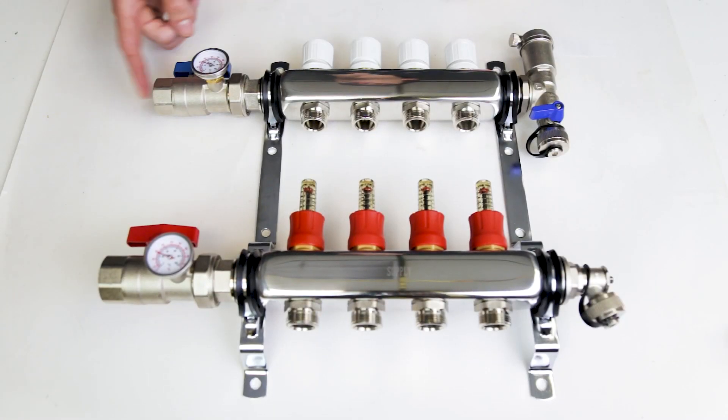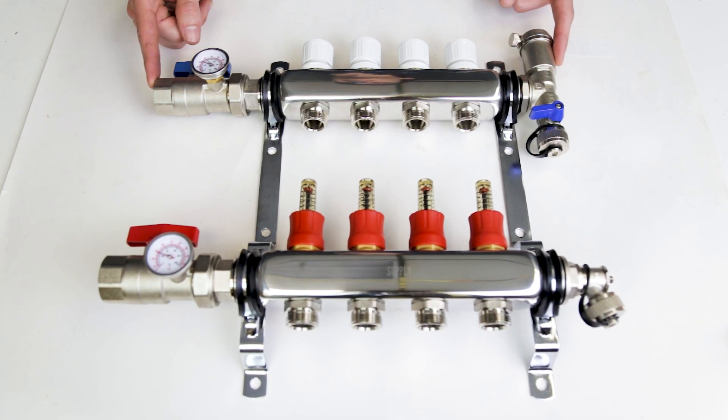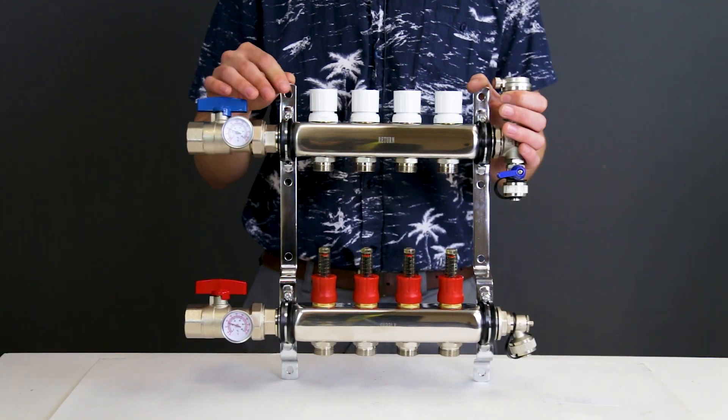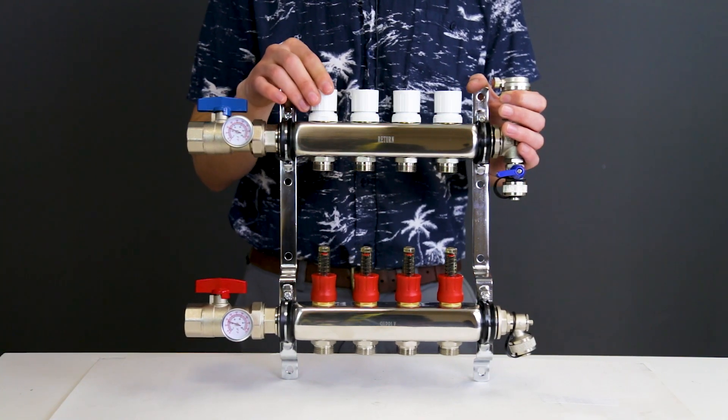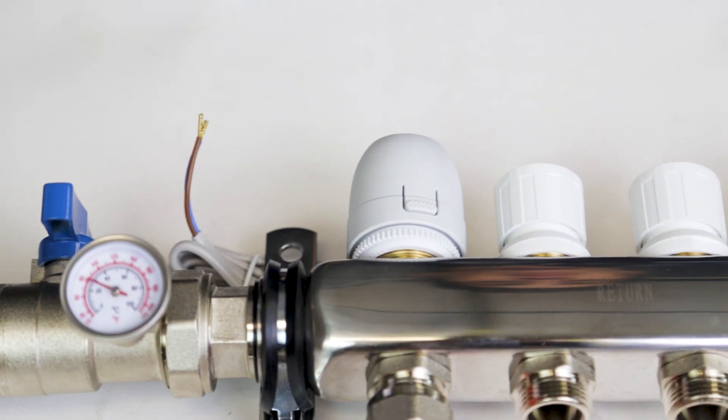Our manifold here has the standard one inch screw on connections. On the top, we have an automatic air vent. On the bottom right side, we have the drain connection. We have temporary decorator caps on the top rail. They are used for isolation and adjustment of each circuit. There is an option to replace them with electronically controlled actuators.